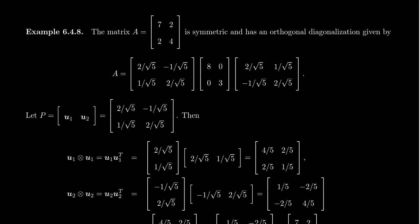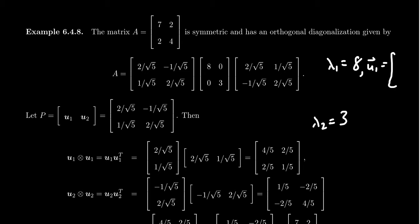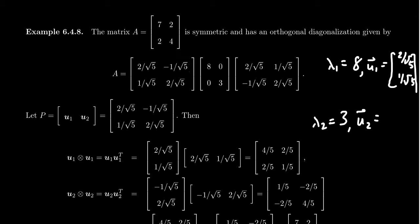It can be shown — I'm not going to give you all the details — but here is an orthogonal diagonalization of the matrix A. Its eigenvalues turn out to be 8 and 3. So eigenvalue one is 8 and eigenvalue two is 3. Looking at the orthogonal diagonalization, here is U1, an eigenvector for A associated to eigenvalue 8: U1 = [2/√5, 1/√5]^T. And for lambda_2, our second eigenvector U2 is the second column: U2 = [−1/√5, 2/√5]^T.